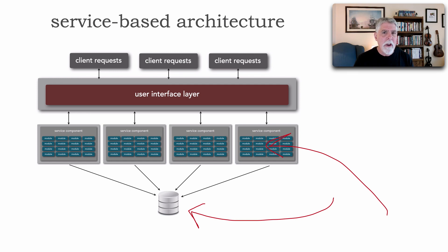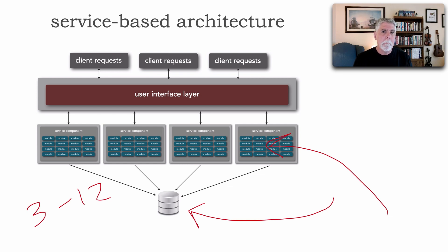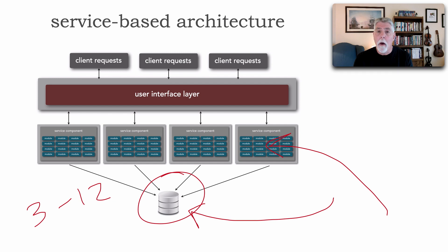Because we can share a single database, and unlike microservices which could have hundreds to thousands of services, in service-based architecture we generally have three to twelve services. If we start going beyond twelve services, we'll start to have change control problems, especially with regards to the database. At that point we're entering microservices territory, where we need operational automation to handle testing, release, and monitoring of services, as well as breaking apart our data.